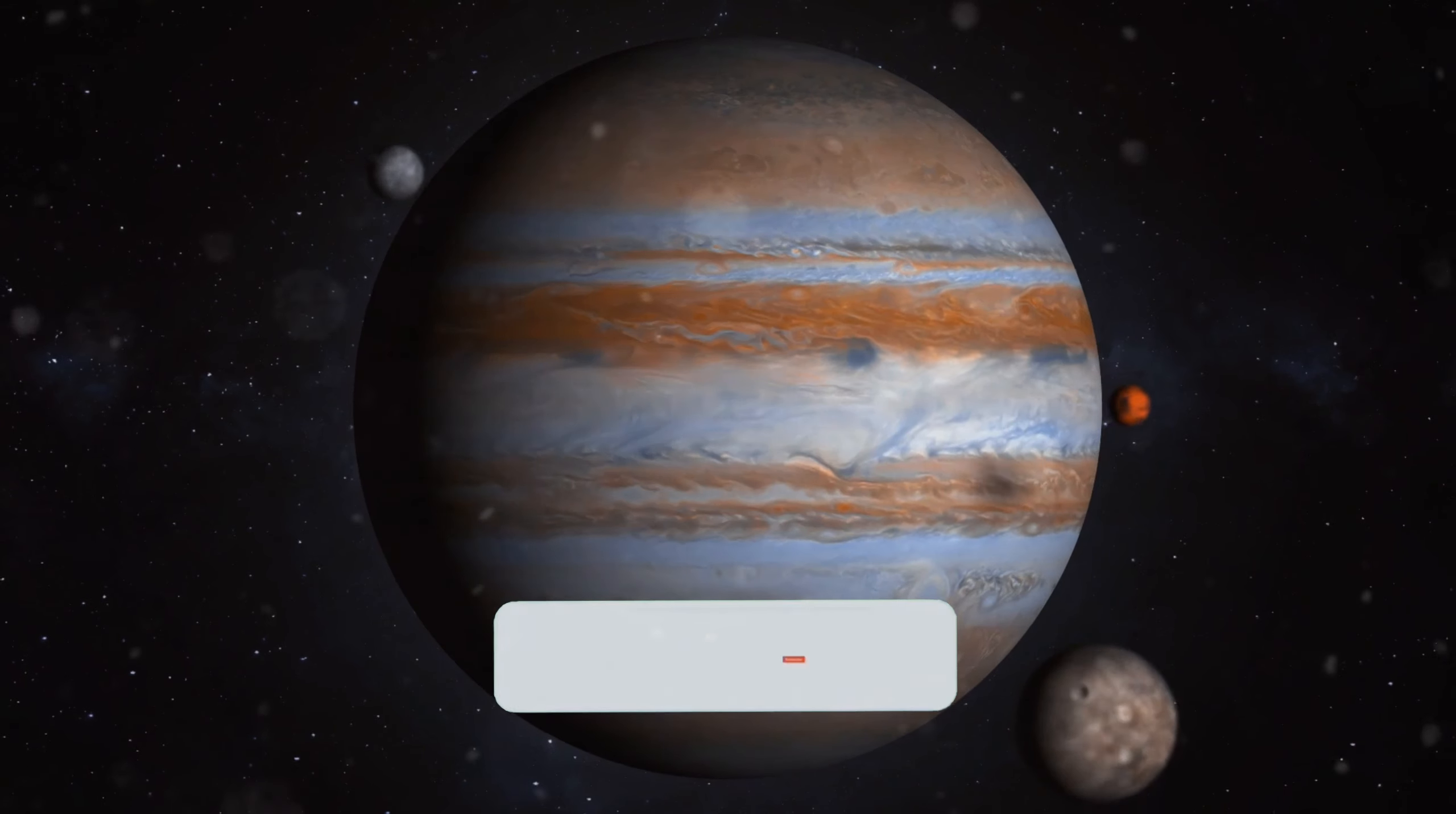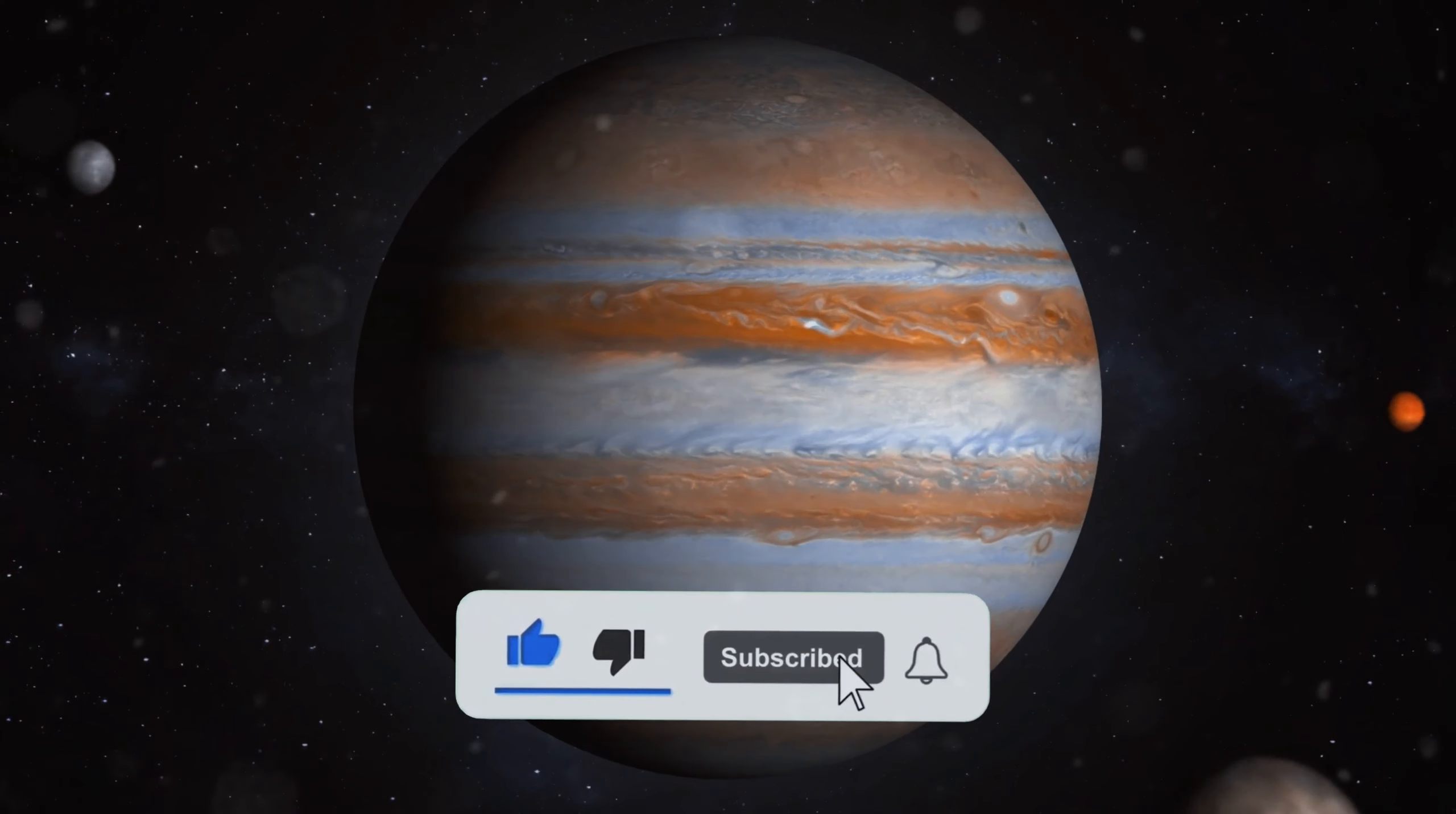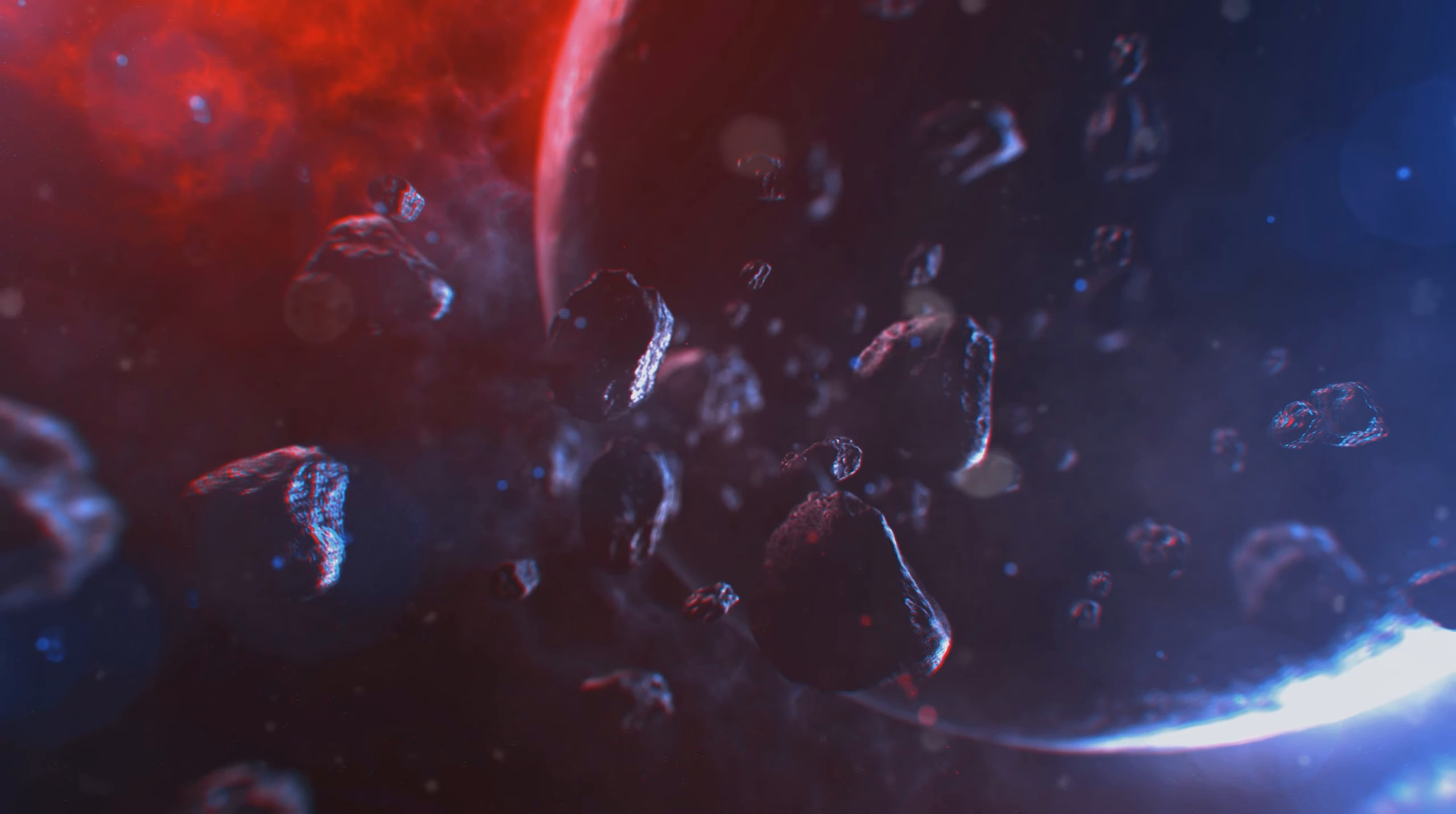But how can one defend against a piece of this size, and what exactly are NASA's plans for Apophis? The asteroid Apophis doesn't have just any name. This asteroid monster was named after the ancient Egyptian god of chaos and destruction.